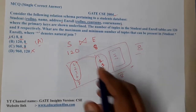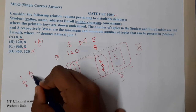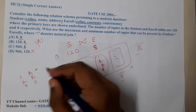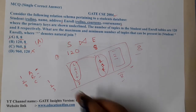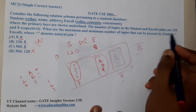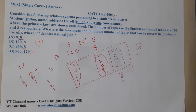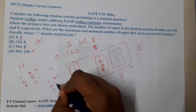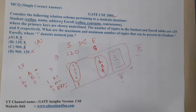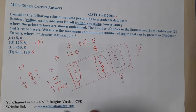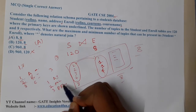Let me explain with a small example. Instead of 8, let's take 3. Suppose we have role numbers 1, 2, 3 with names A, B, C. In Enrollment, each student took exactly one course — say AI, Machine Learning, and DBMS. So 1A took AI, 2B took ML, 3C took DBMS. There are 3 entries in Enrollment, and the natural join gives 3 tuples.